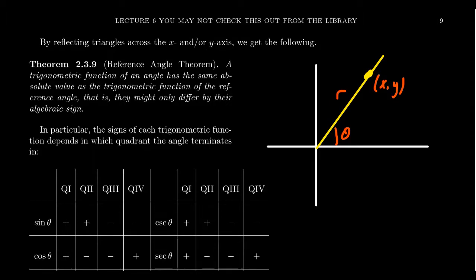If this point is in the first quadrant, then naturally a right triangle can be connected to this angle. So the sine, cosine, tangent, etc. of this angle — whether you take the right triangle perspective or the terminal point perspective — will give you the same trigonometry.